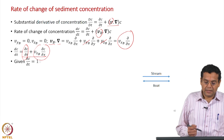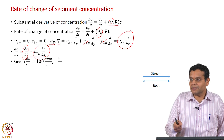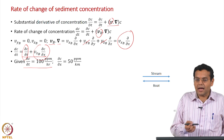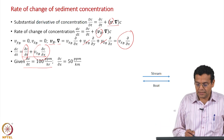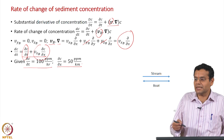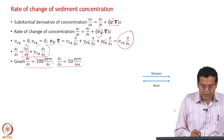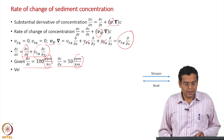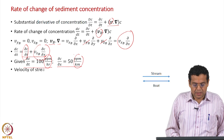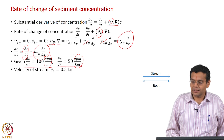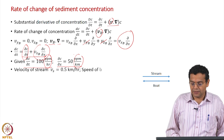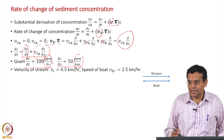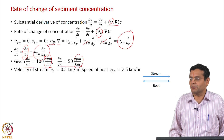We are given in the question that at a particular location the rate of change of sediment concentration ∂c/∂t is 100 ppm per hour, and as you travel there is a change in concentration given by ∂c/∂x — the change in concentration with respect to distance — in units of ppm per kilometer. The velocity of the stream v_s is 0.5 kilometers per hour, and the speed of the boat v_br is 2.5 kilometers per hour.